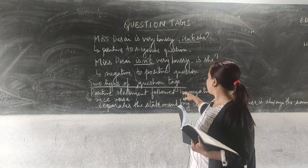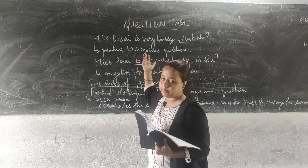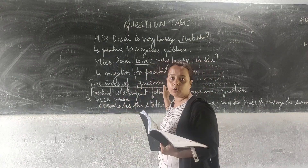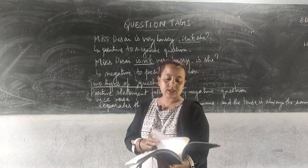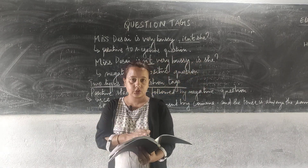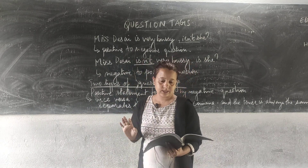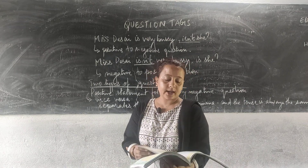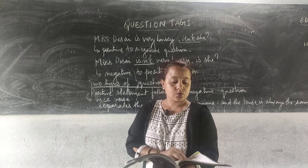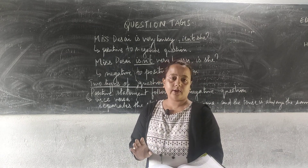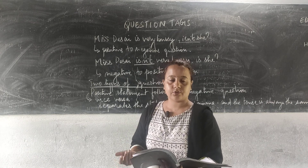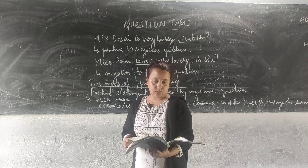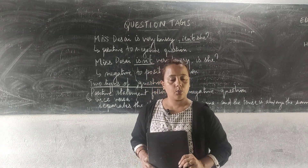There are two types of question tags: first, a positive statement followed by a negative question tag; and second, a negative statement followed by a positive question tag. This is the most easiest chapter. I hope everyone is quite clear with the explanation. I will be providing you with some solved questions related to this chapter, and there are exercises to be done from your book as well. Please complete and submit the work. Thank you.